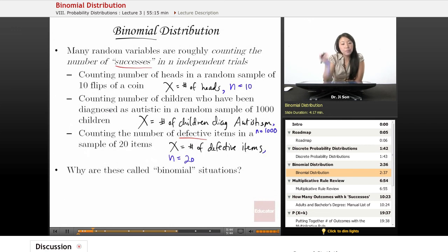For the autism example, it's either being diagnosed as autistic or not getting that diagnosis - there are only those two outcomes. For the defective items, it's either being defective or not being defective - it's one or the other of those two outcomes.